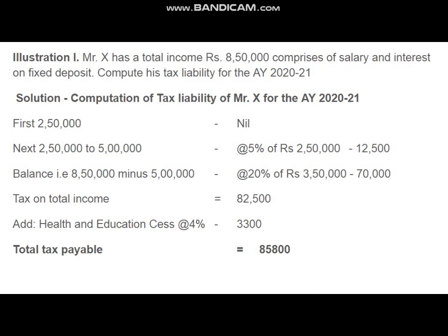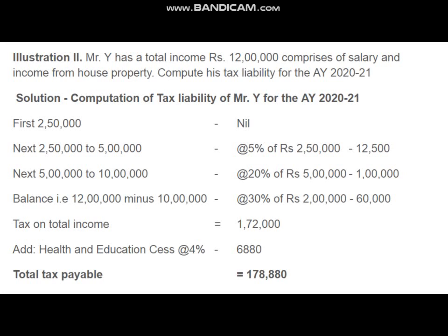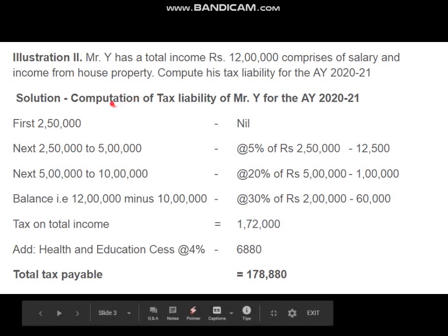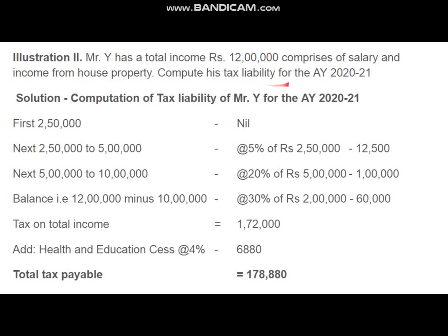I hope you understood the problem. We can discuss one more problem for more clarity. The question is almost similar; the only difference is that in this case the person has income more than 10 lakh, so the 30 percent slab will also be applicable. Mr. Y has a total income of rupees 12 lakh, comprising salary and income from house property. Compute his tax liability for the assessment year 2021. Mr. Y's taxable income is 12 lakh for the year.